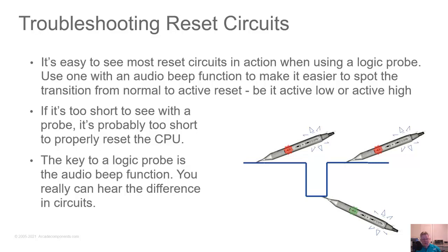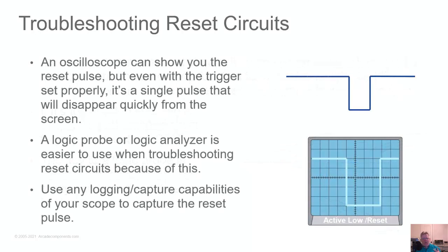If you have something that's too short to see with the logic probe, it's probably too short to properly reset that CPU. When looking at a power on reset, you'll see a momentary low then back up to high if it's active low, or high then momentarily low then back to high if it's active high. With an oscilloscope you can see the reset pulse, but the problem is it's a single pulse — it'll just flash on the screen and disappear. If you have a scope that can capture waveforms, log or capture it to see it longer. A logic probe or logic analyzer is actually better for troubleshooting these types of circuits than an oscilloscope.